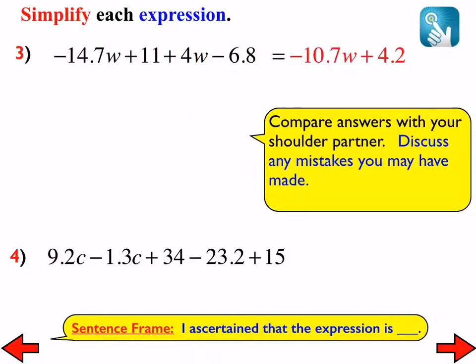And then how about number 4? What did you get? I ascertain that the expression is 7.9c plus 25.8. Say that one more time, please. 7.9c plus 25.8. Is that what you got? Anybody want to disagree with that? Wait. That is right, isn't it? I'm sitting here looking at the wrong problem. But why does it say negative right here? Nobody caught that. That should be positive because we have more positives than we do negatives. That should be positive 7.9c.